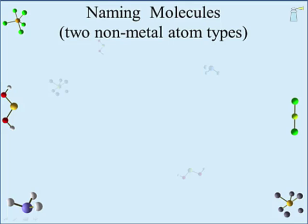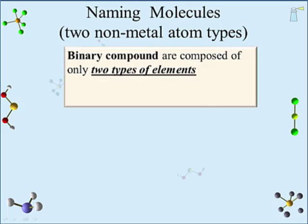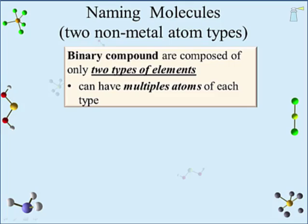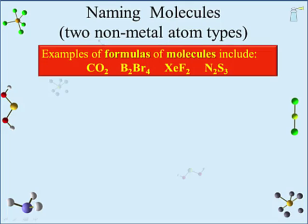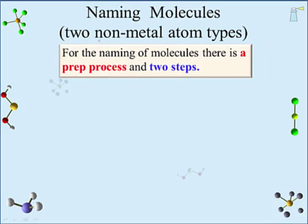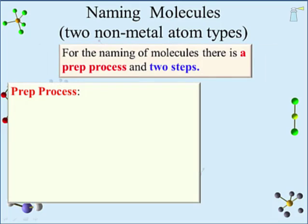First up is the naming of molecules. We will limit ourselves to binary compounds composed of only two types of elements. They can have multiple atoms of each type — binary compounds are not limited to two atoms, just two atom types or two elements. Molecules have molecular formulas. Note that every element in every compound is a non-metal. For the naming of molecules, there is a prep process and two steps. The prep process involves gathering all the components of the name before compiling the final name.